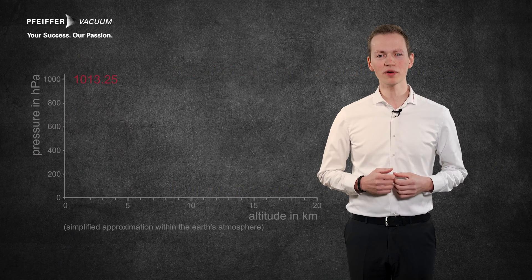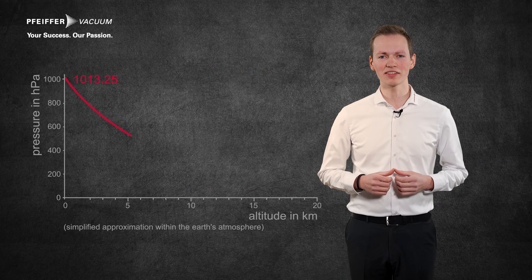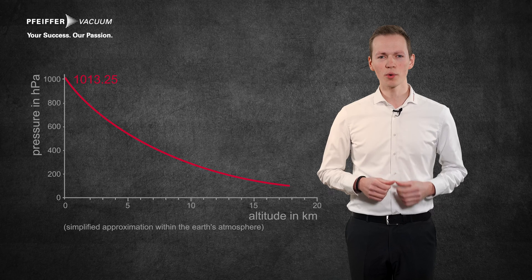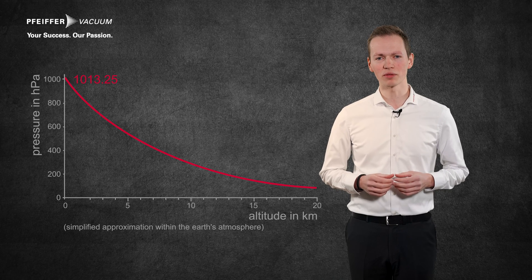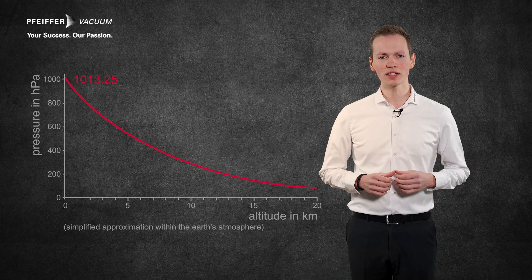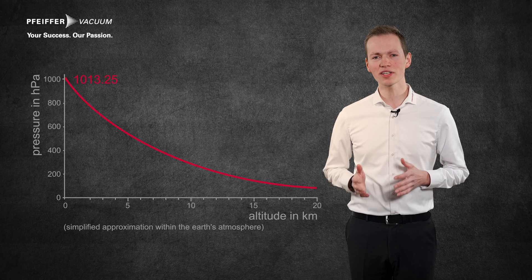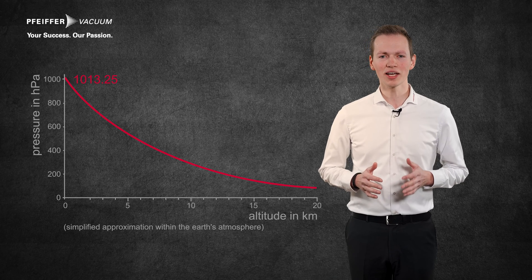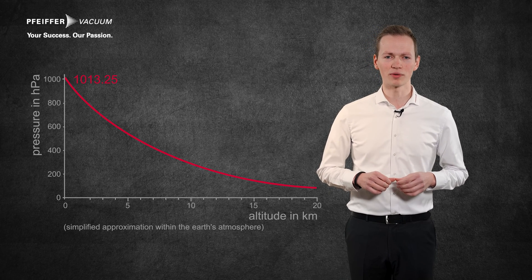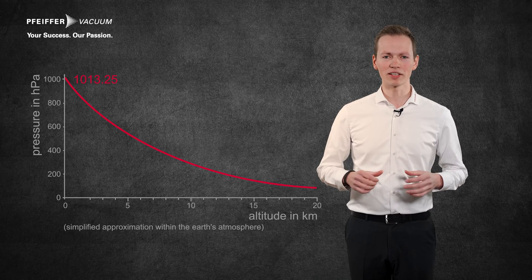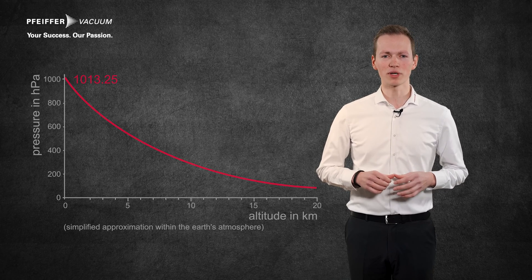Both atmospheric pressure and particle density decrease with increasing altitude. We'll look at the exact meaning of these two terms in one of our next videos. The decrease of atmospheric pressure with increasing altitude results in different pressure ranges in the closer environment of our planet. These ranges can be explained well with the help of this graphic.